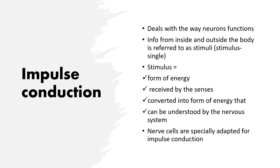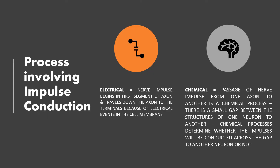Nerve cells are specially adapted for impulse conduction. Impulse conduction can occur through electrical or chemical processes. In the electrical process, the nerve impulse begins in the first segment of the axon and travels down to the axon terminal because of electrical events in the cell membrane.